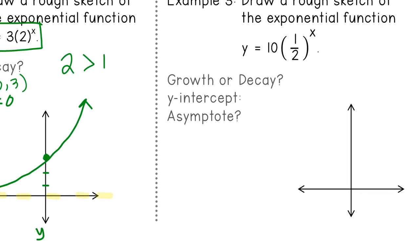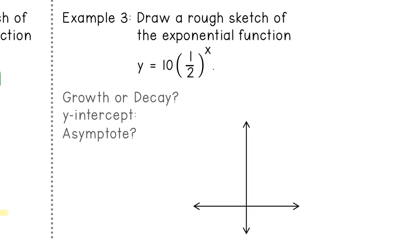And then the last example, example number four. Draw a rough sketch of the exponential function y equals ten, one half to the x power. So just like before, I'm going to follow the rules. Because what's inside the parentheses is one half. That is less than one. Which means that this is going to be exponential decay.